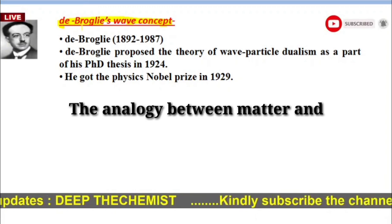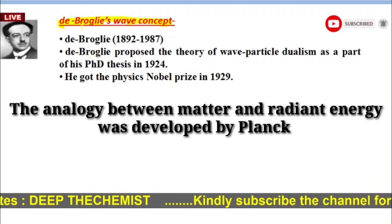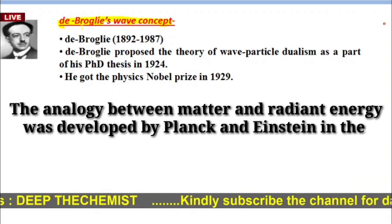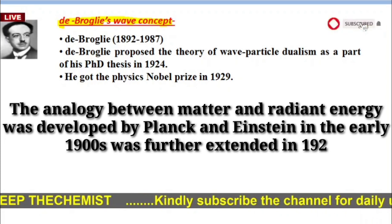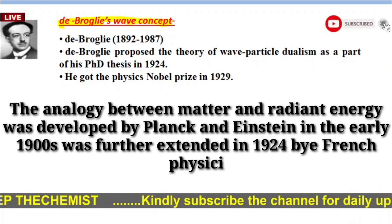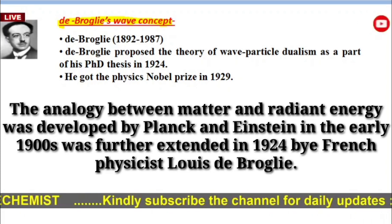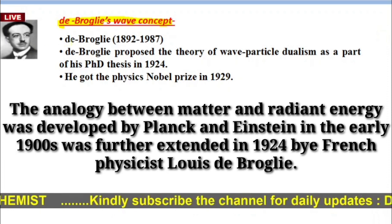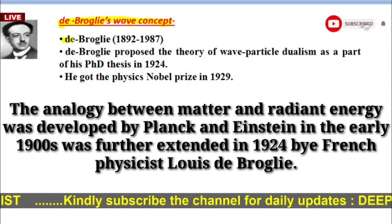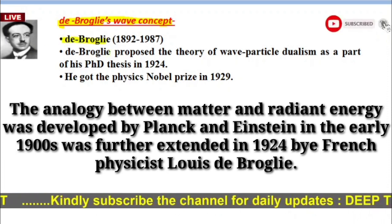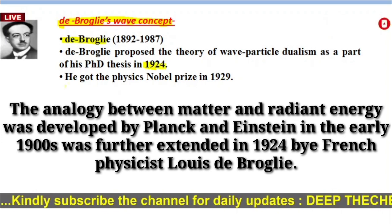The analogy between matter and radiant energy was developed by Planck and Einstein in the earlier 19th century, and it was further extended by a French physicist known as Louis De Broglie in 1924.